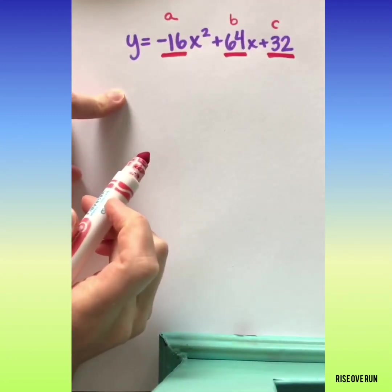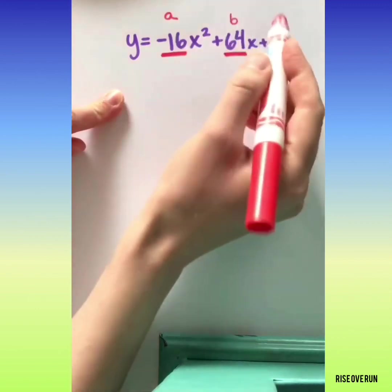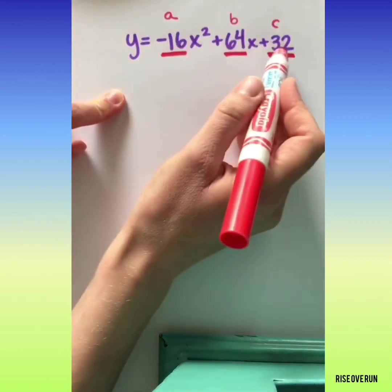Let's talk about quadratics in standard form. Remember that a, b, and c refer to the coefficients and the constant.